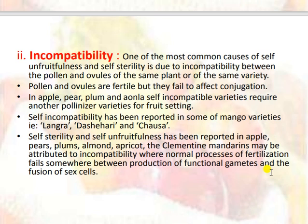Incompatibility is one of the most common causes of self-unfruitfulness and self-sterility, due to incompatibility between the pollen and ovules of the same plant or variety. Pollen and ovules are fertile but fail to effect conjunction. In apple, pear, plum, and aonla, self-incompatible varieties require another pollinizer variety for fruit setting. Self-incompatibility has been reported in some mango varieties — Langra, Dashehari, and Chausa. Self-sterility and self-unfruitfulness in apple, pear, plums, almond, apricot, and clementine mandarins may be attributed to incompatibility, where normal fertilization fails somewhere between the production of functional gametes and fusion of sex cells.